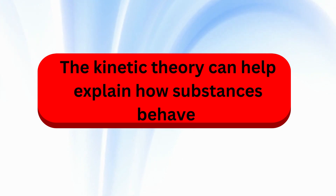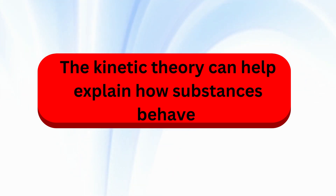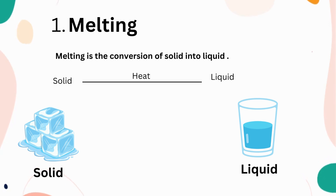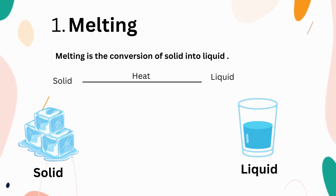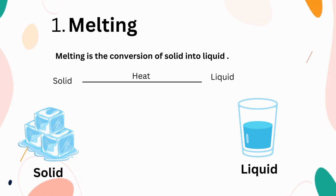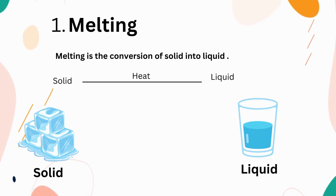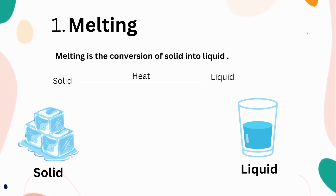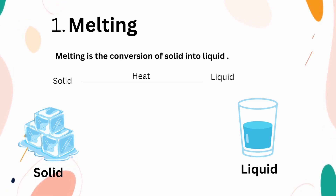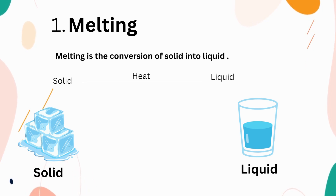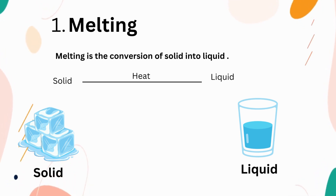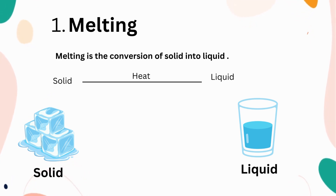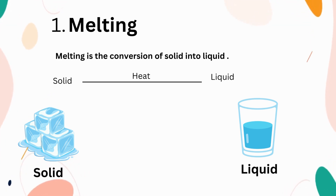The kinetic theory explains how substances behave through different processes. The first is melting. Melting is the conversion of a solid into a liquid by providing heat. For example, when you apply heat to an ice cube, it melts into water. The ice cube is the solid form of water, and after providing heat, it converts into the liquid state.